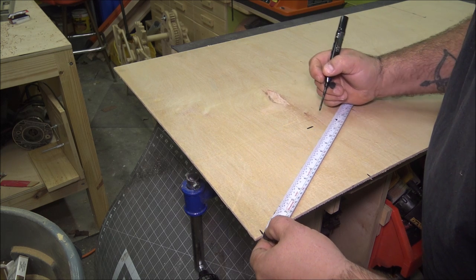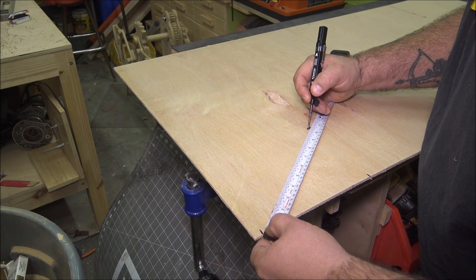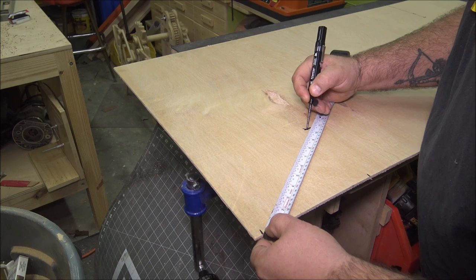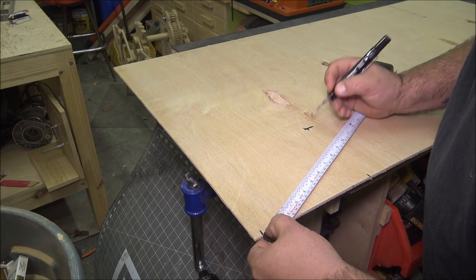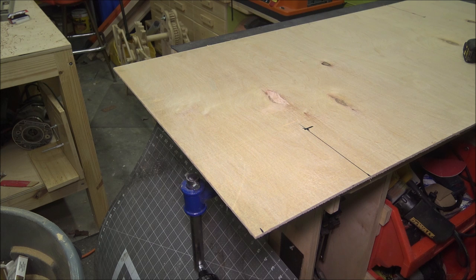And where the ten inch line intersects the six inch line is exactly 90 degrees from your original mark. And here's a square just to prove it.